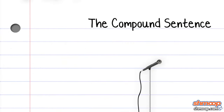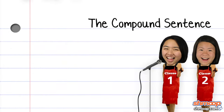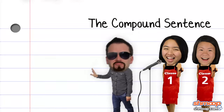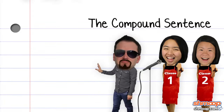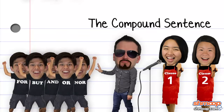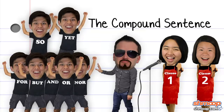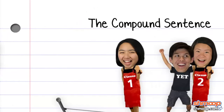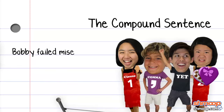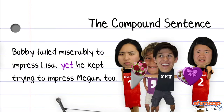In a compound sentence, you've got one sentence but two independent clauses, joined by a FANBOYS coordinator. And by FANBOYS, we mean: for, and, nor, but, or, yet, and so. These FANBOYS are just dying to get between two independent clauses, usually preceded by a comma. For example: 'Bobby failed miserably to impress Lisa, yet he kept trying to impress Megan, too.'